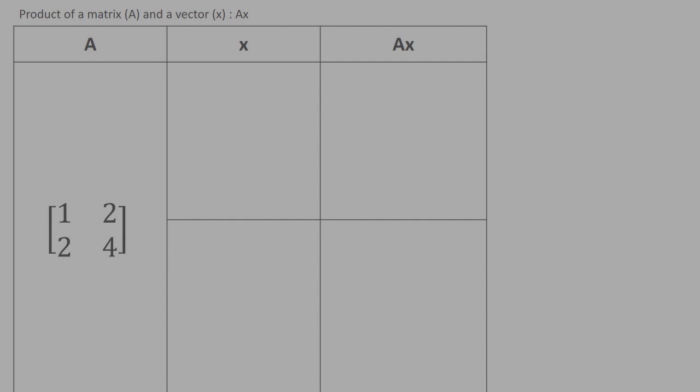Let's first analyze the product of a matrix A and a vector x. Let me illustrate this with a simple example. I have taken A as a 2 by 2 matrix as shown and we shall consider two different cases for x.